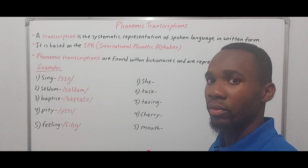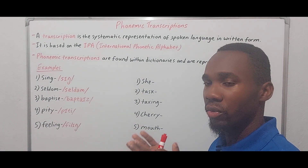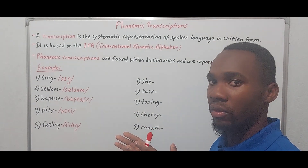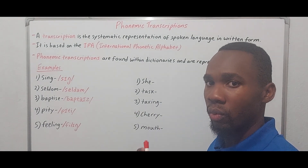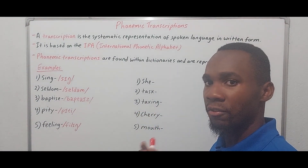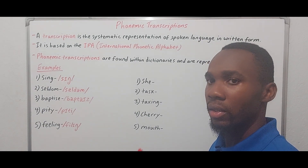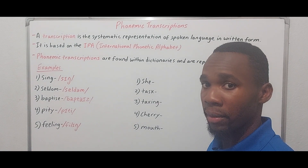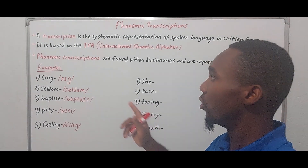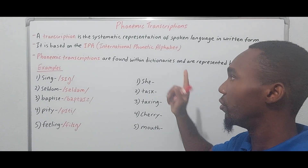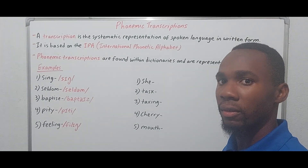Phonemic transcriptions only include the phonemes, which refer to the distinct sounds — the different sounds that comprise the word. They're not very detailed, and a person who is unfamiliar with linguistics is likely to understand them. They are usually represented by slash brackets and you will find them within dictionaries.